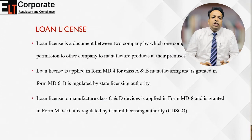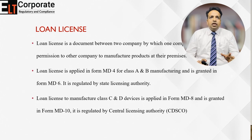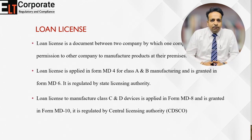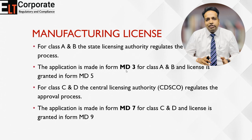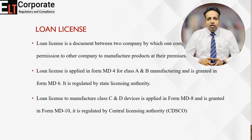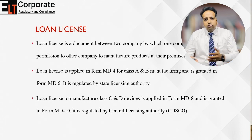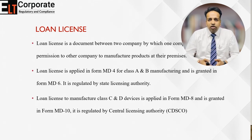The third type is the loan license. A loan license is basically an arrangement between two companies by which one company grants permission to another company to manufacture products at their premises. Loan licenses are typically applied in cases where the manufacturer — the brand owner — is not interested in disclosing the name of the vendor from whom they are getting their goods manufactured. In that case, they generally prefer to take a loan license and produce goods at the premises of such a manufacturer, showing on the label that they are the manufacturer of those goods.